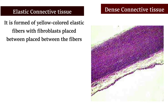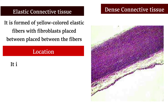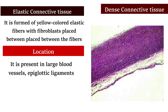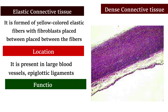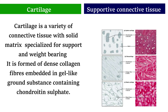Elastic connective tissue is formed of yellow-colored elastic fibers with fibroblasts placed between the fibers. It is present in large blood vessels and epiglottic ligaments. It provides strength with elasticity.